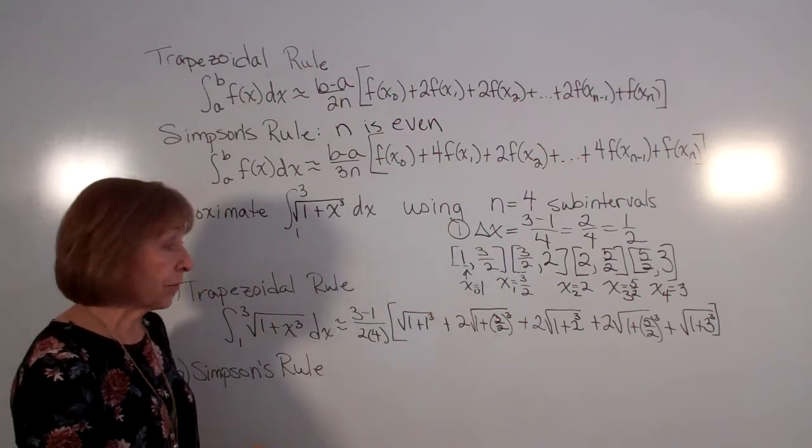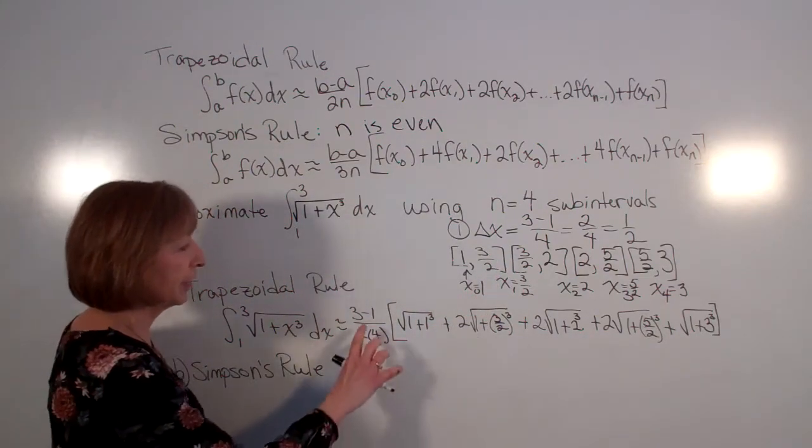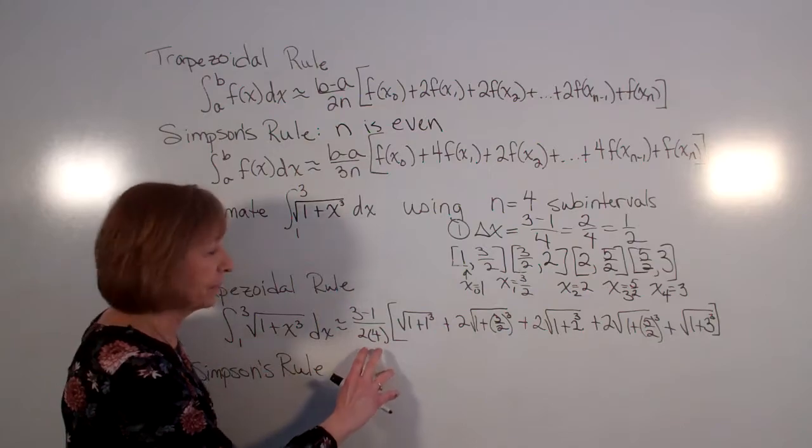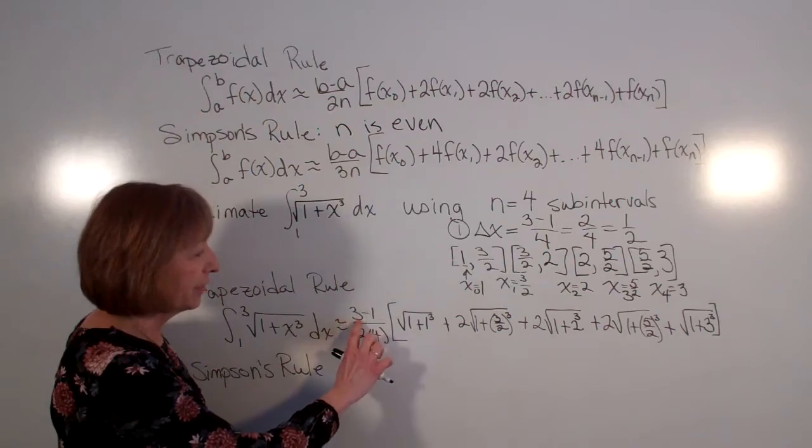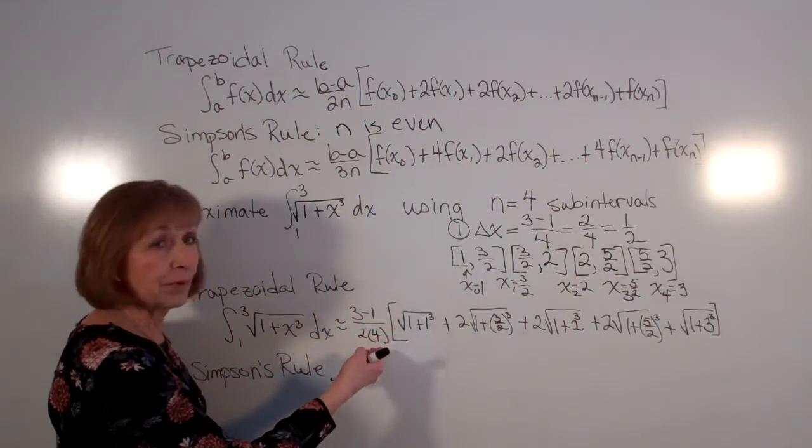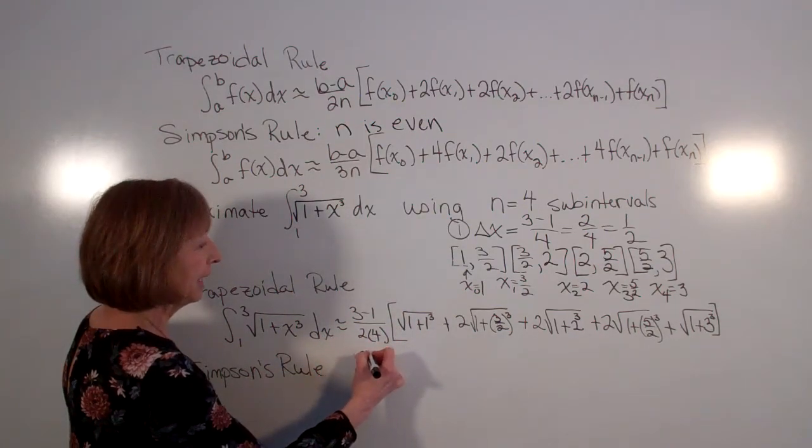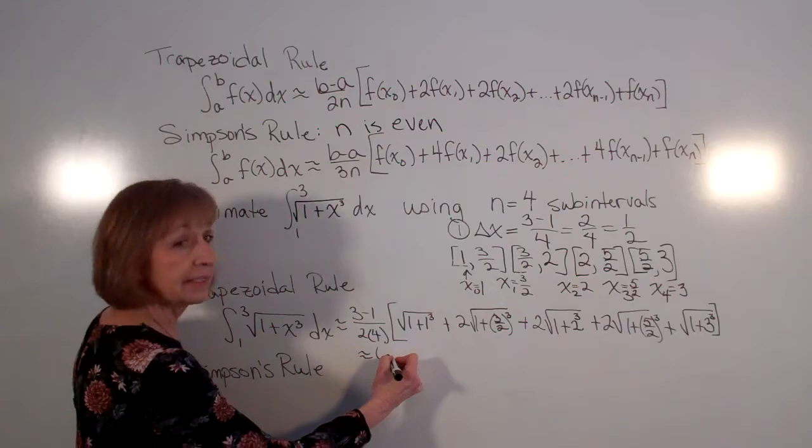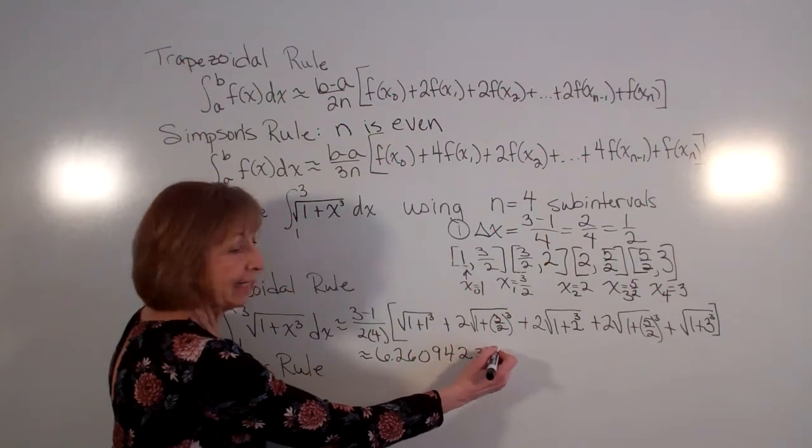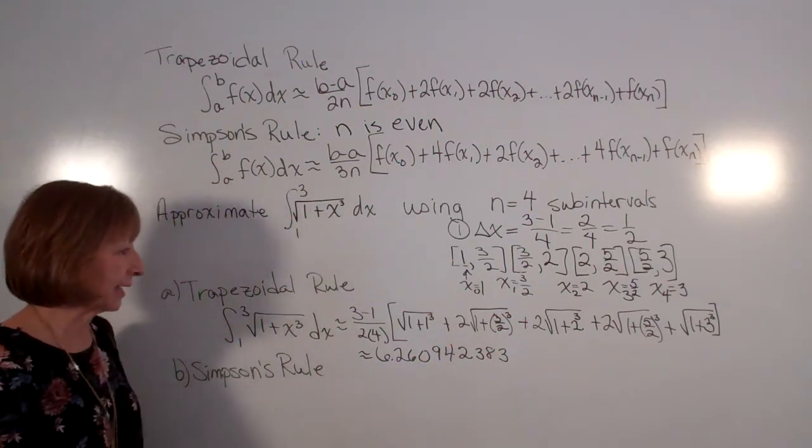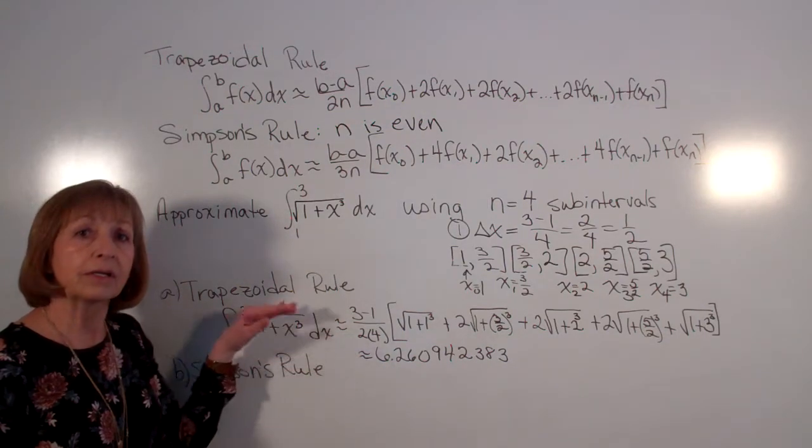Now when we go through and just calculate this whole thing through, we're just going to run this through our calculator. Certainly you can clean this up so that you don't have as much to key in with your calculator as this first factor. 3 minus 1 is 2, so then you have 2 eighths or 1 fourth there. And then keying that through and you'll get that this is about 6.260942383 in that approximation of that definite integral using our trapezoidal rule.